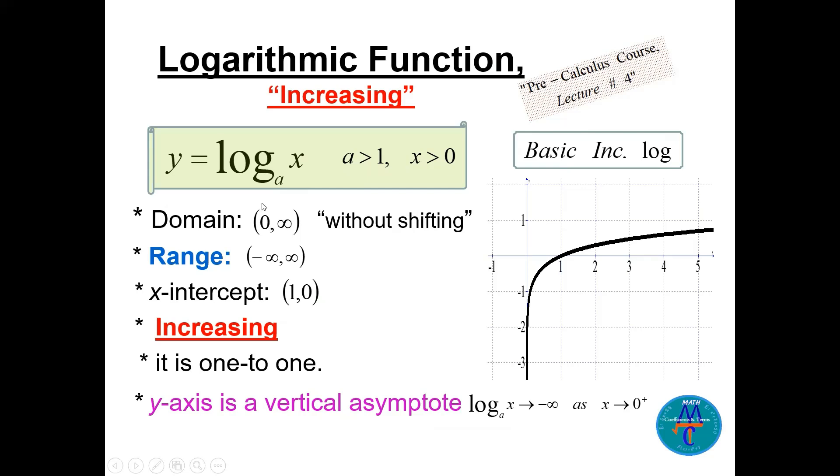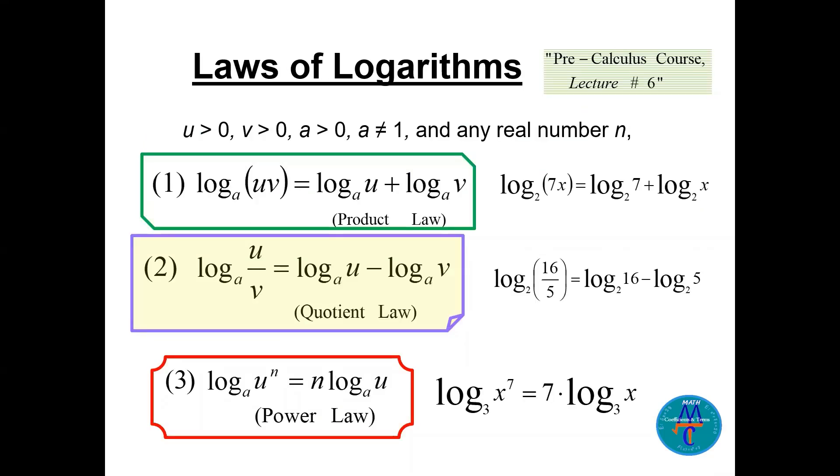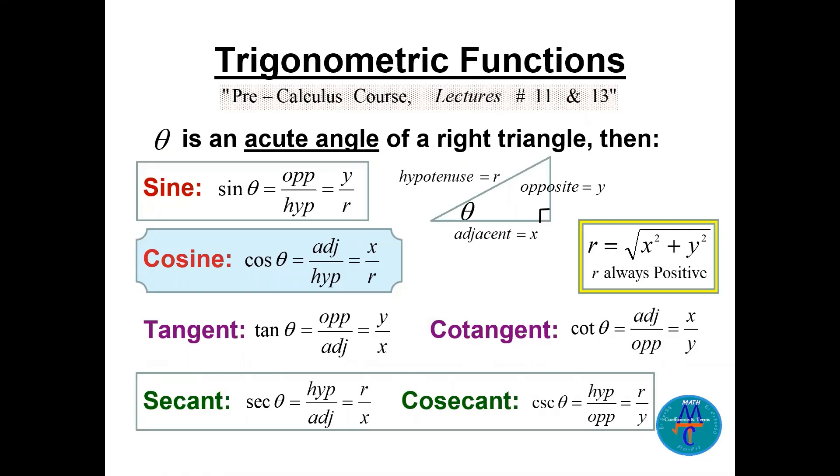This is logarithmic function, pre-calculus course lecture number four. Remember in the logarithmic we have increasing if the base is bigger than one and we have decreasing function if the base is between zero and one. Now here we see the laws of logarithms which we have seen in the pre-calculus course lecture number six. There are the conditions here: u should be positive, v is positive, a the base is positive, a cannot be one, and any real number n. So we have the product law: logₐ(uv) = logₐu + logₐv. The quotient law will be logₐ(u/v), there is a subtraction here. And we have the power law: logₐ(uⁿ) = n·logₐu.